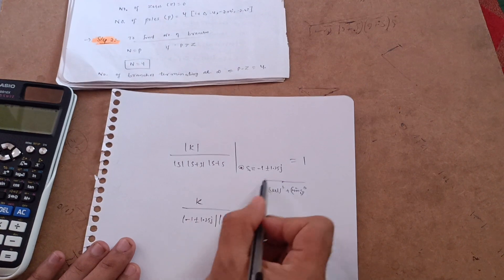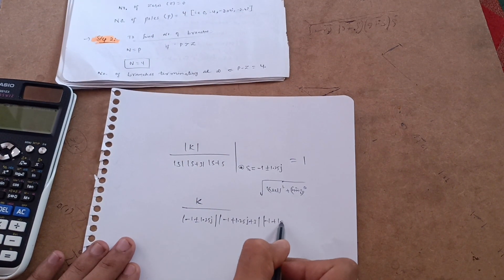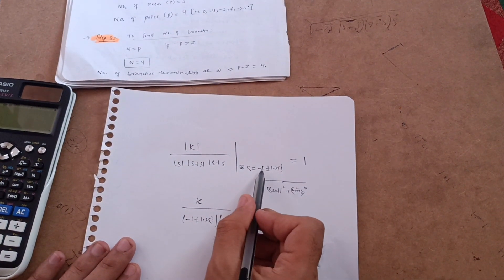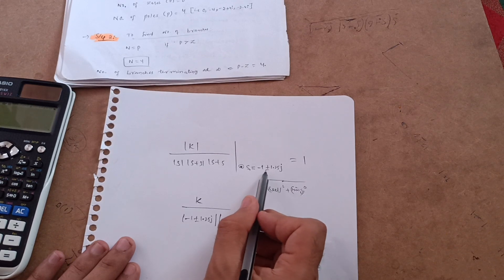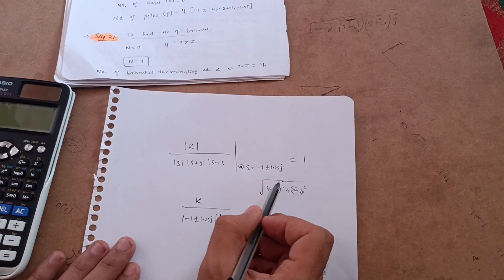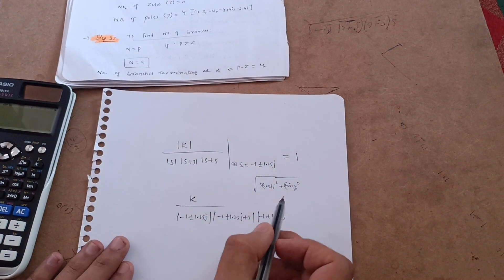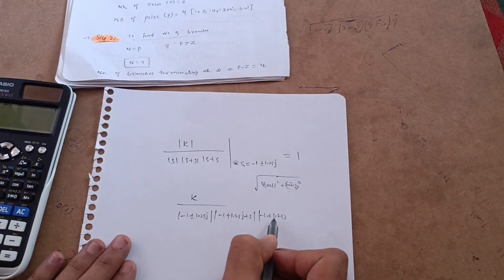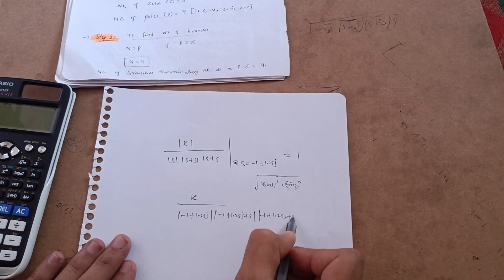Then mod of s value, you have to put again minus 1 plus 1.25j. You can take only one value minus 1 plus 1.25, not minus 1 minus 1.25. In the mod you will get positive values every time. So this is minus 1 plus 1.25j plus 5 is in the term over here, which is always equal to 1.